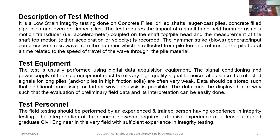The PIT method is a low strain integrity test performed on concrete piles, drilled shafts, auger cast piles, concrete-filled pipe piles, and even timber piles. The test requires the impact of a small handheld hammer using a motion transducer, that is an accelerometer, coupled on the pile head. The measurement of the shaft top motion, either acceleration or velocity, is recorded. The hammer strikes generate a low compressive stress wave which travels from the hammer into the pile.